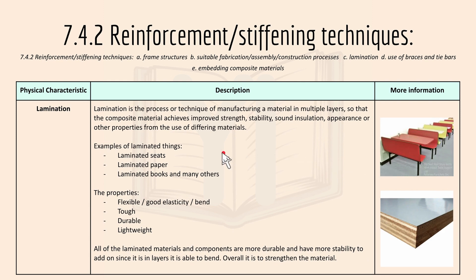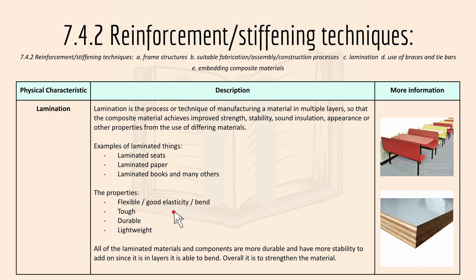Lamination is the process of manufacturing a material in multiple layers so that the composite material achieves improved strength, stability, appearance, or other properties from the use of different materials. Examples of laminated items include laminated seats, laminated paper, and laminated books. The properties of laminated objects include flexibility, good elasticity, toughness, durability, and being quite lightweight. Overall, lamination is used to strengthen the material.